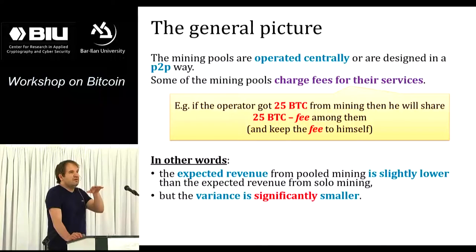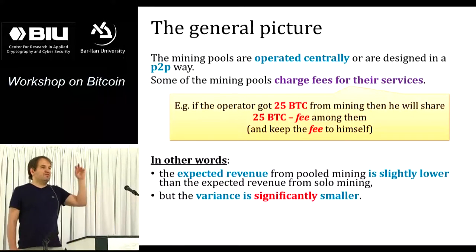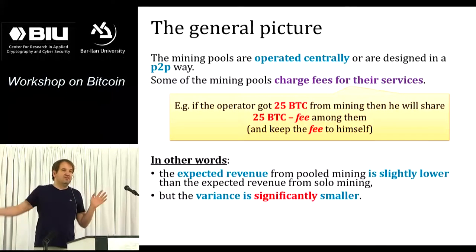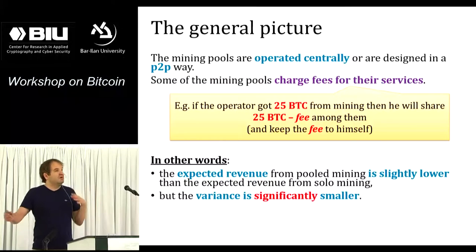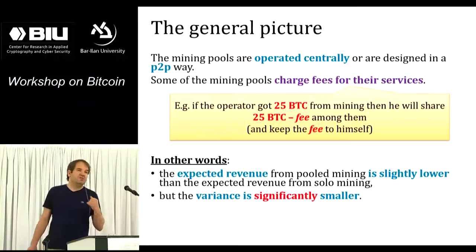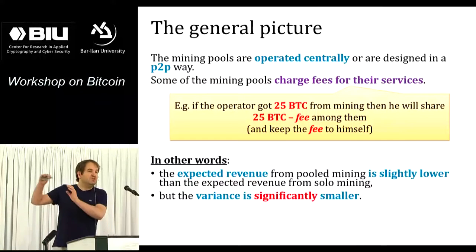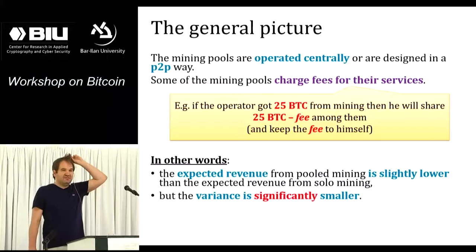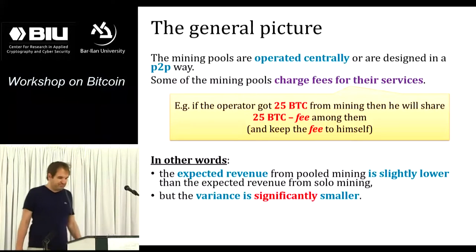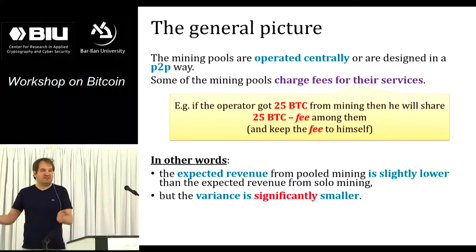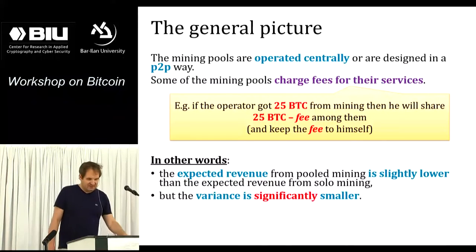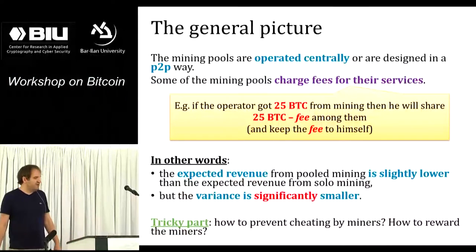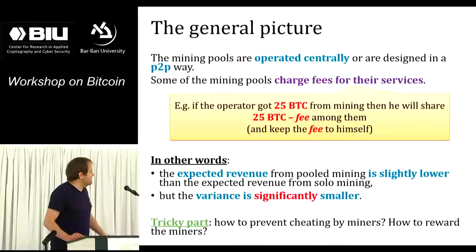If you are mining solo you have like 0.001% of computing power, so your chances of mining a block next year are very low. If you're in a mining pool with 10% of computing power, on average 1 in 10 blocks will be mined by this pool, and once in every 10 blocks you get a small reward proportional to your share in the pool. Expected value is not everything in life - you also care about variance. Sometimes people prefer higher variance like lotteries, but usually people want stable income.